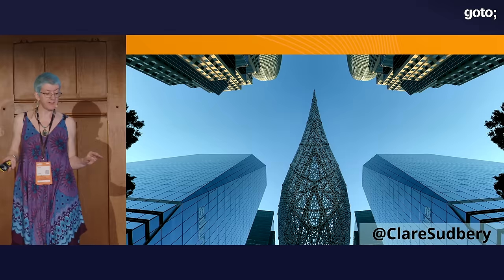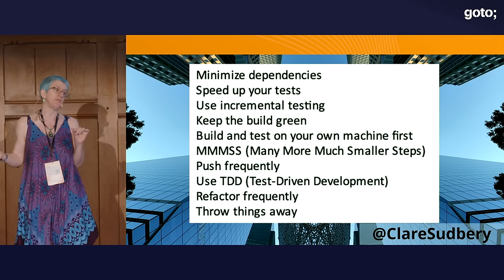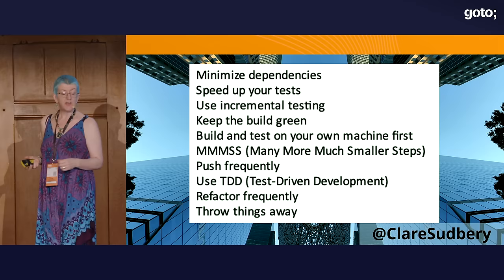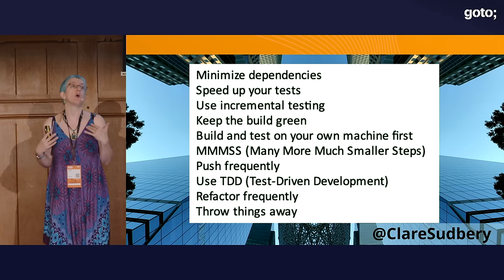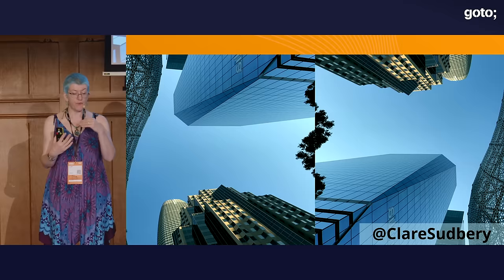Build trust. Collaborate. Be patient. Implement automated testing — extremely important. Minimize dependencies. Speed up your tests; you need a fast test suite because otherwise you increase friction and people won't run them or will delay integration. Use incremental testing — tools that can detect which tests need to be run when you've made a small change. Keep the build green. Build and test on your own machine before you push to a remote server. Use many more much smaller steps in everything you do. Push your code frequently. Use test-driven development. Refactor frequently, and if you need to, throw things away.